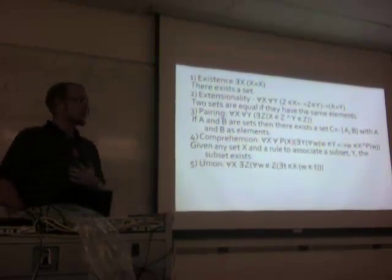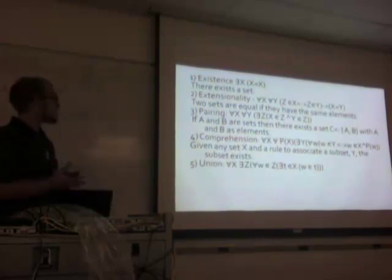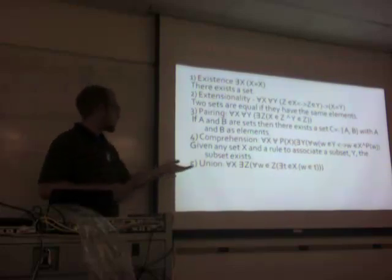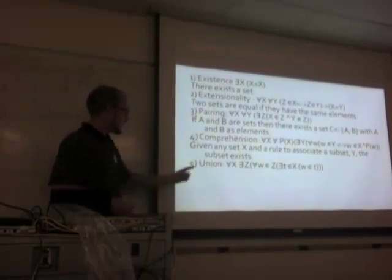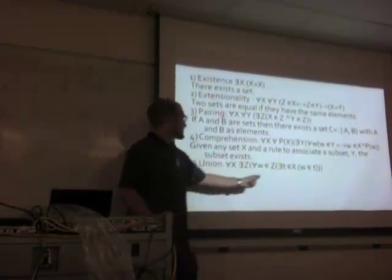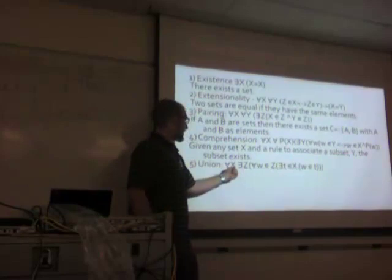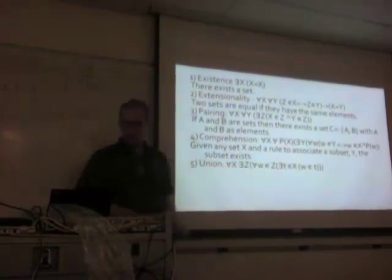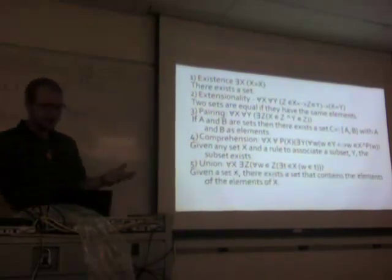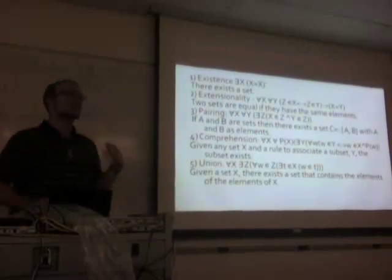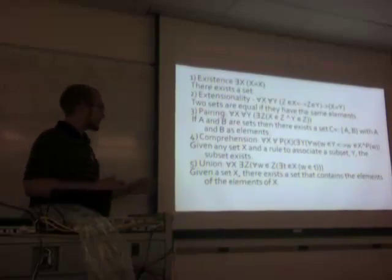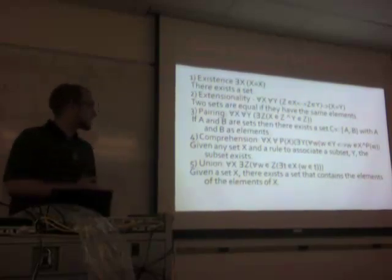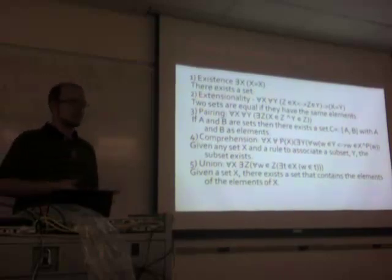The last axiom I will be needing today is the union axiom. For every x, there exists a z such that for every w in z, there's going to be an element t inside of x that w is inside of. It's a little confusing — you have to stare at it a couple of times, maybe bang your head on the wall. Given a set x, there exists a set that contains the elements of the elements of x.